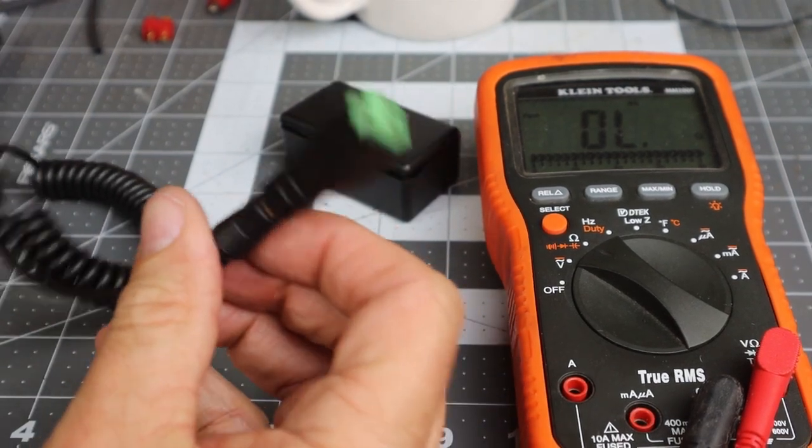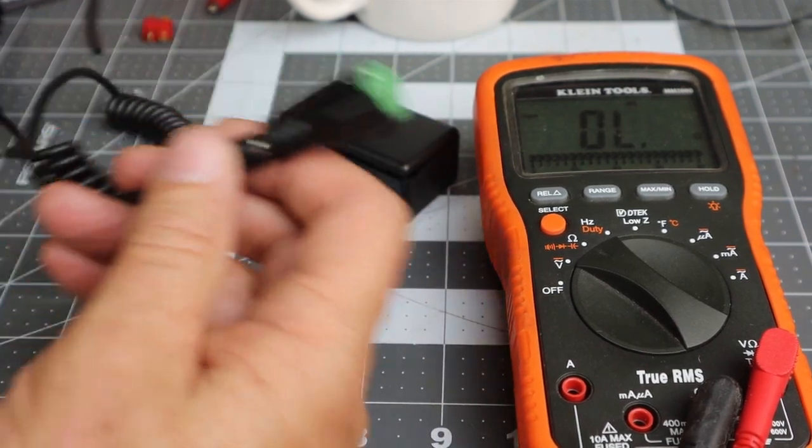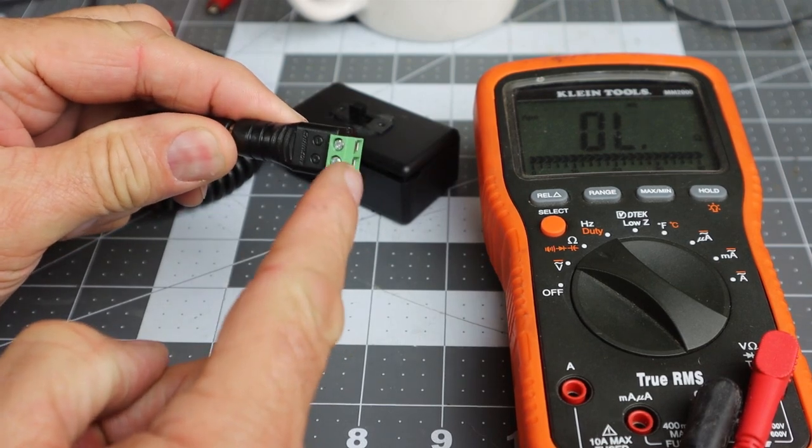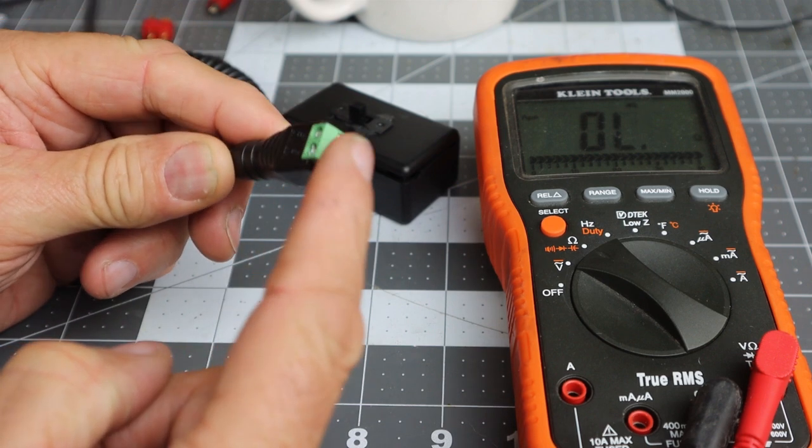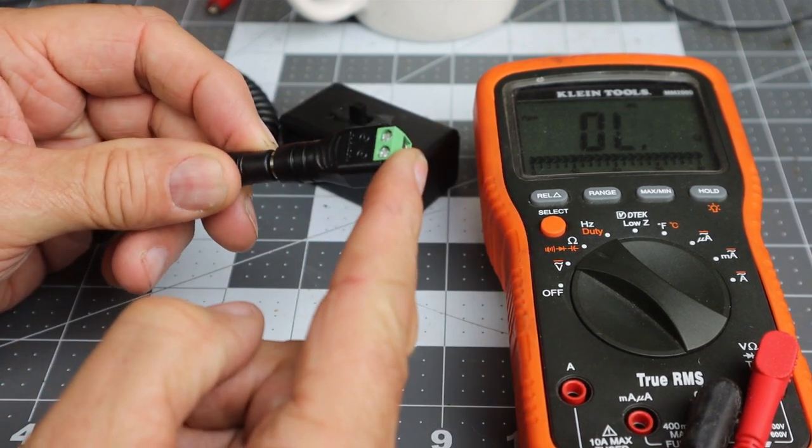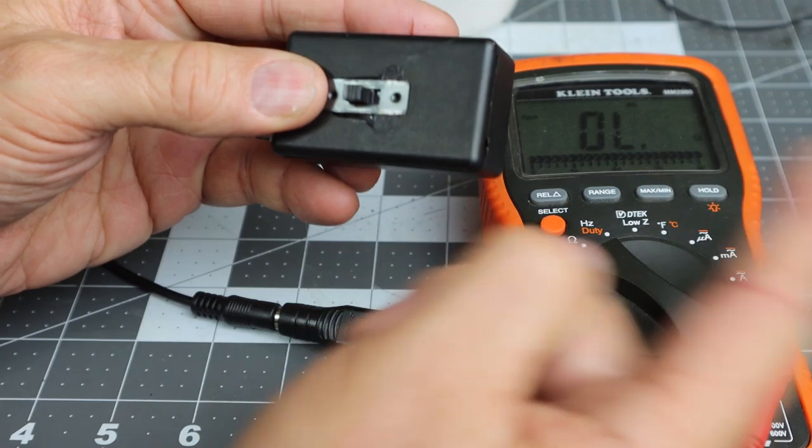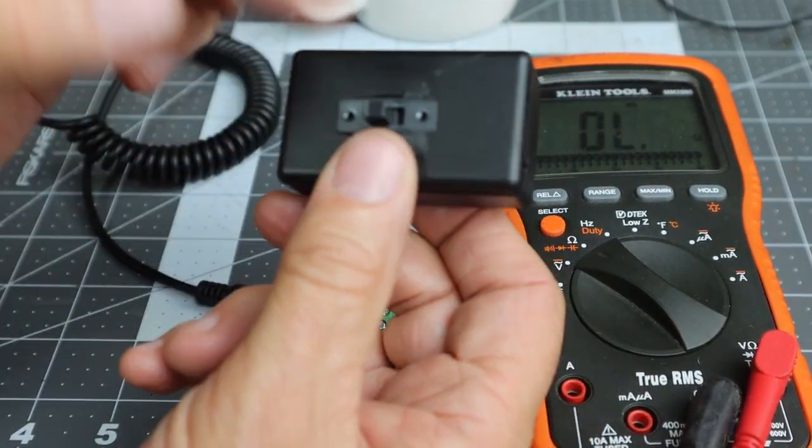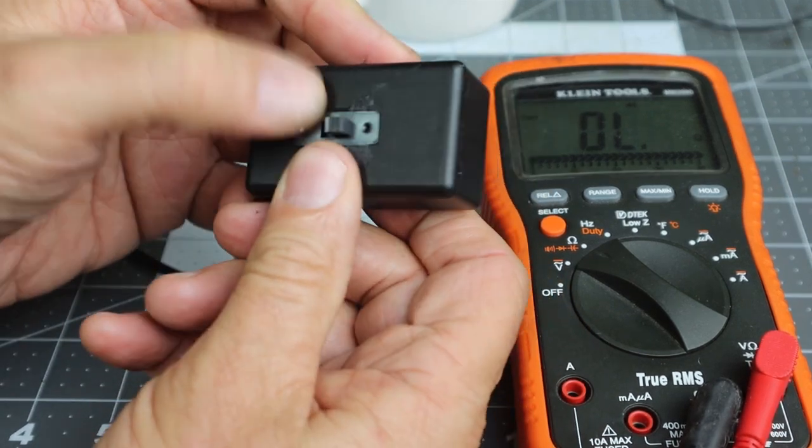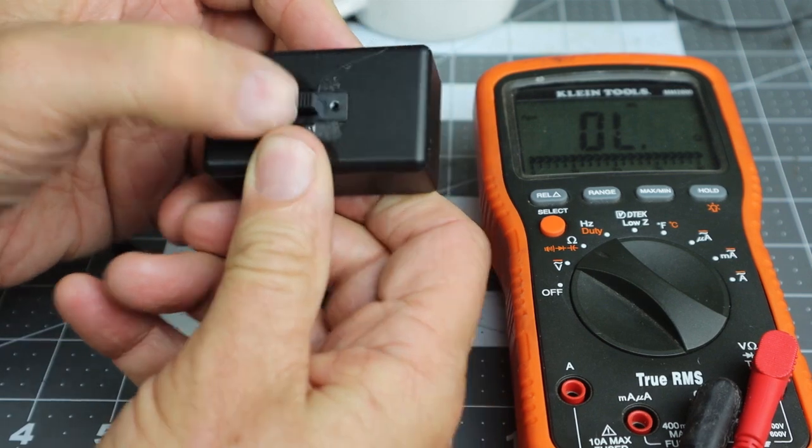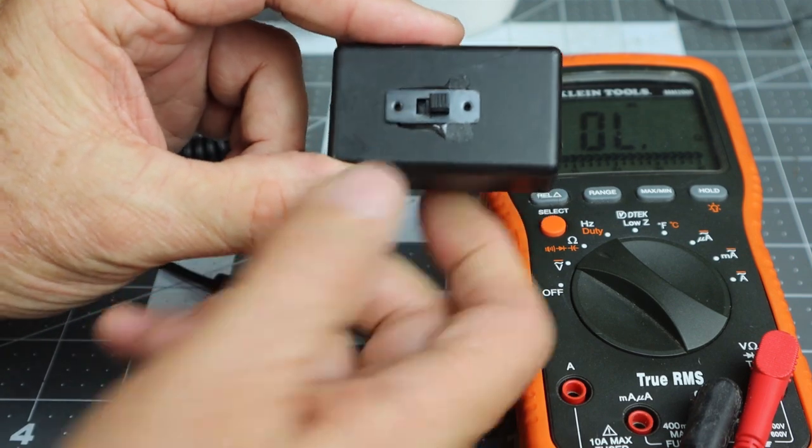Since we only need the 12-volt positive source for the DC to DC converter, we're going to take two wires, 16 to 18 gauge, tie them into the positive side of this barrel connector, and run both leads through the box. On one of the leads, the black lead, we'll run that through the switch so we can turn on and off that 12-volt source for the purpose of the limiting current option on the battery charger.